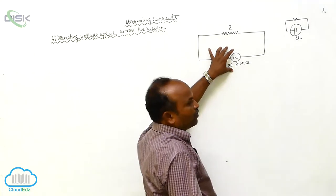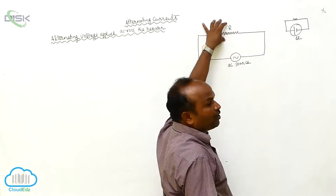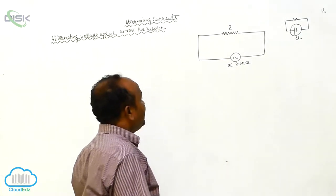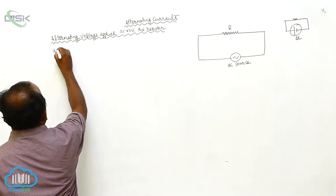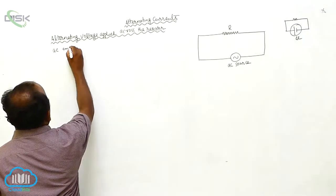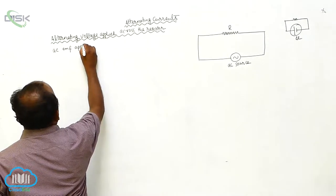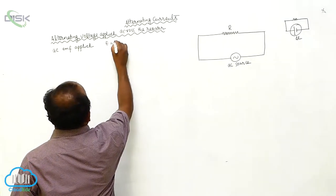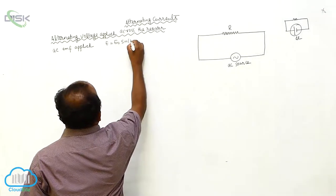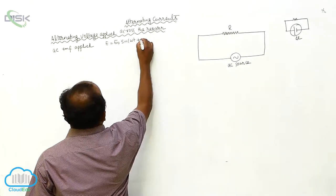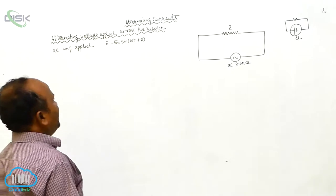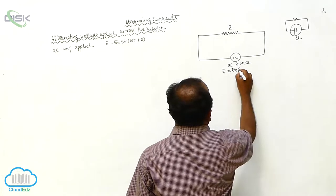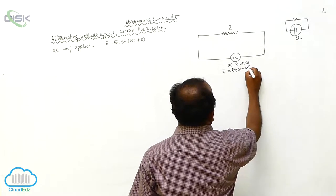As the AC source is applied to the resistor, that means AC EMF is applied. The applied EMF is: E is equal to E₀ sin(ωt + φ).